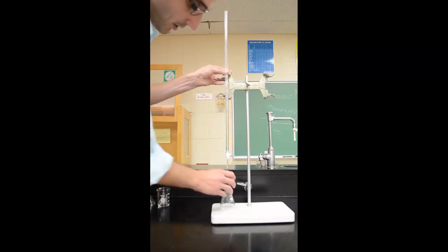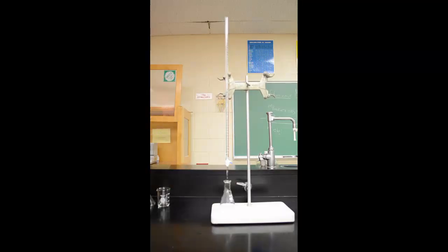Now we are ready to make our initial reading. A burette reads the opposite way that a graduated cylinder does. This is 50 and this is zero. We make the reading by doing an initial volume reading, and then we subtract the final volume reading. The difference is how much volume we delivered to our container.